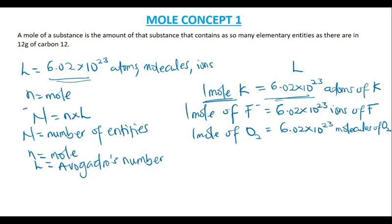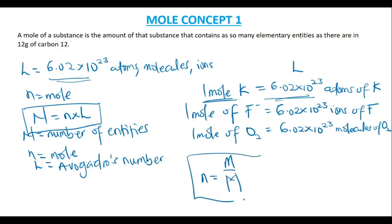This equation or relation is very important. We can also find a mole by using the molar mass of a particular quantity. The molar mass is the mass of one mole of the substance, and the mole can also be given by mass over molar mass. This relation is also very very important. Now let's look at some basic examples on what mole is and how we can solve it using Avogadro's number and capital N, which is the number of entities.